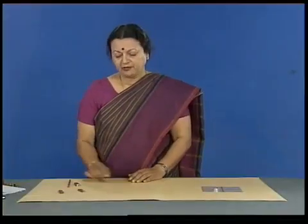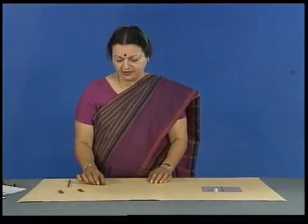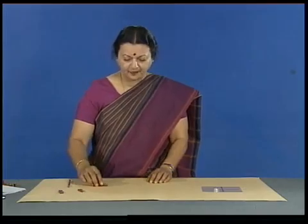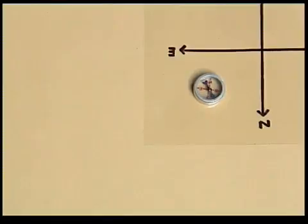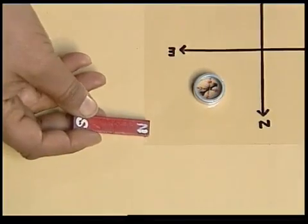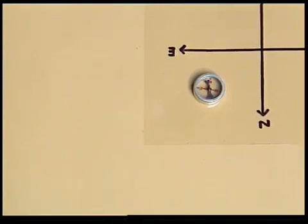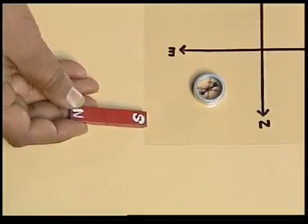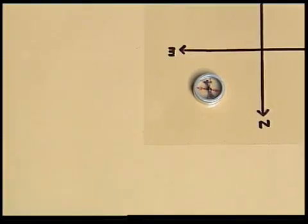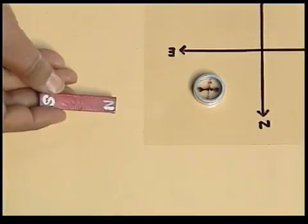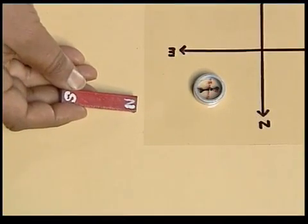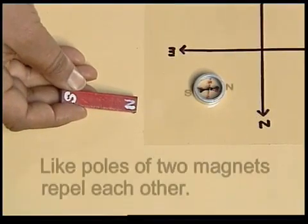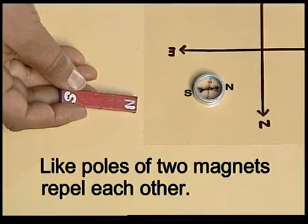What would happen if we bring a magnet close to this compass needle? The needle gets deflected. Now if we bring the other pole of the magnet close by, the needle gets deflected in the opposite direction. When we bring the north pole of the magnet near the tip, the tip moves away, because like poles of two magnets repel each other.